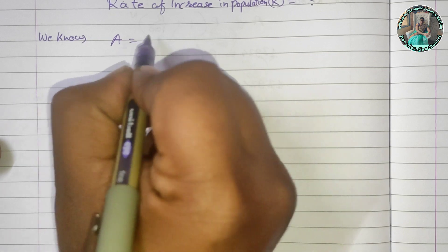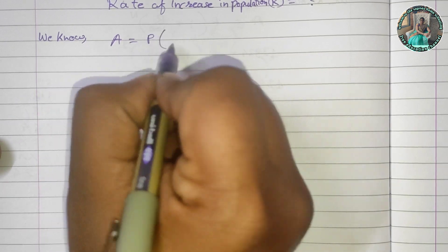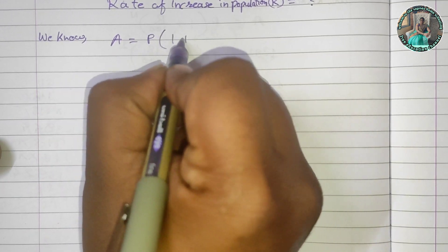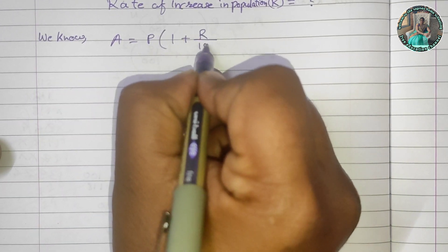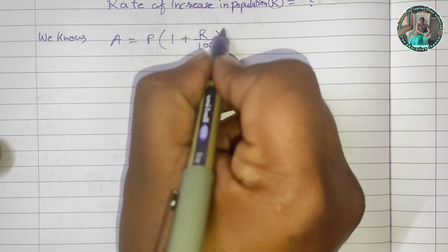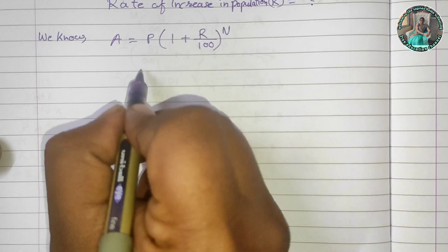A is equal to P into 1 plus R upon 100, raised to the power N.